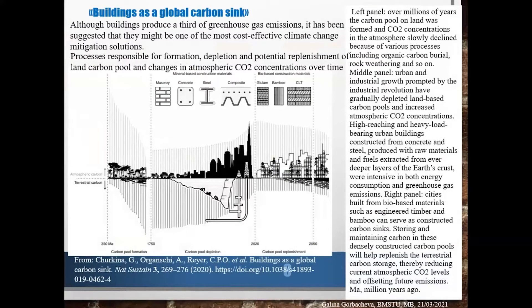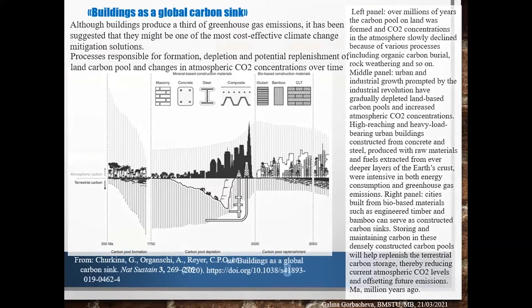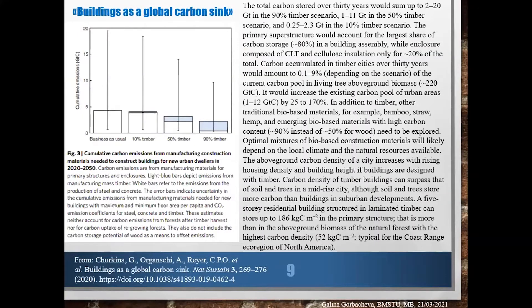While buildings produce a third of greenhouse gas emissions, it has been suggested they might be one of the most cost-effective climate change mitigation solutions — buildings as a global carbon sink. Cities built from bio-based materials such as engineered timber and bamboo can serve as constructed carbon sinks. Different model forecast scenarios were suggested for estimating carbon stock in wood buildings; the total carbon stock over 30 years would sum up to 20 gigatons in the 90% timber scenario.